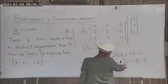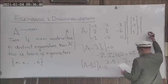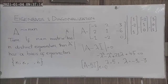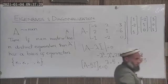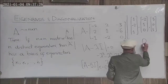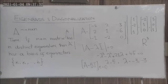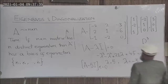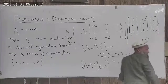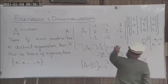Corresponding to each eigenvalue — for example lambda equal to 5 — you solve the system and find the corresponding eigenvector. Similarly, corresponding to the second eigenvalue you determine eigenvectors. There are three linearly independent eigenvectors, and these eigenvectors span R^3. Therefore this basis is called the eigenbasis.